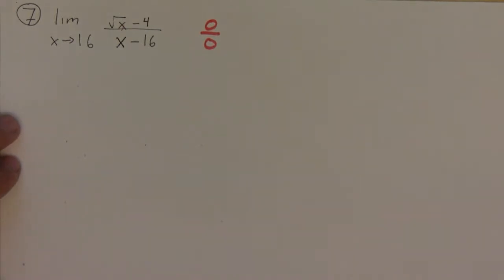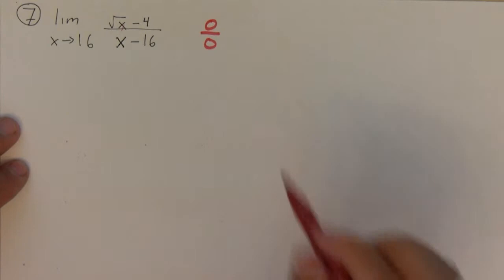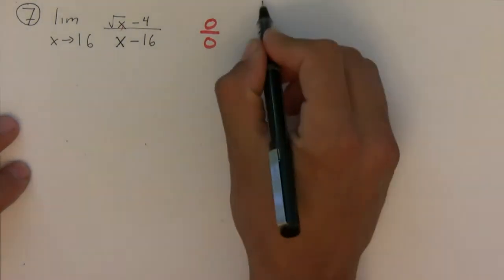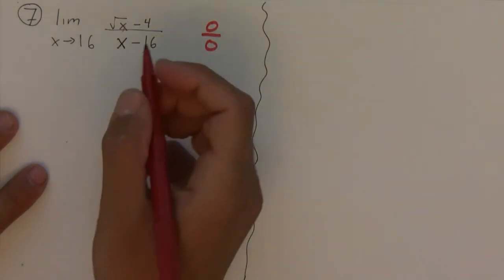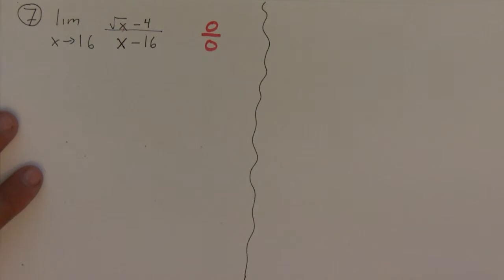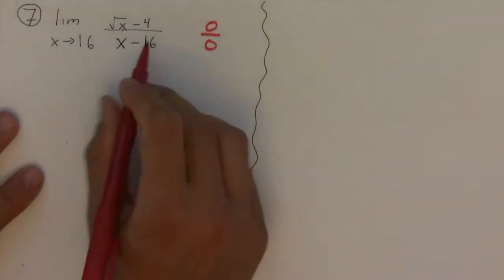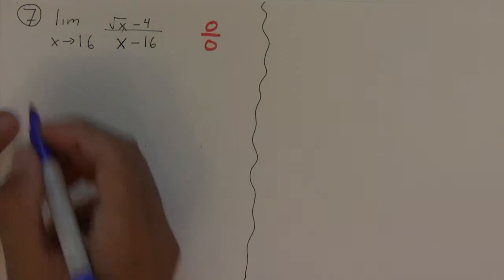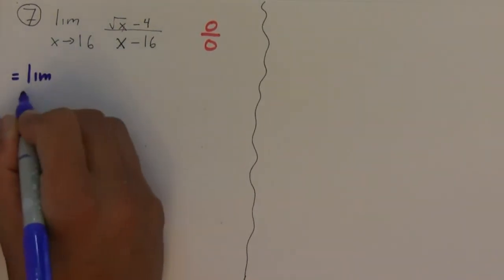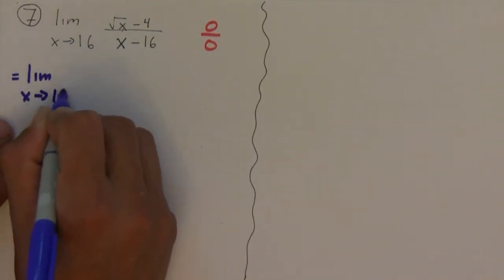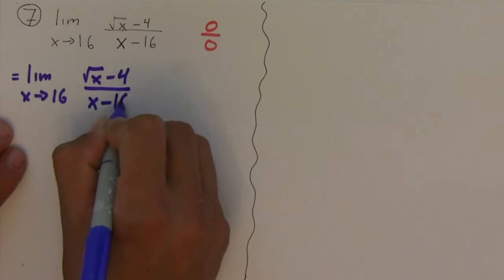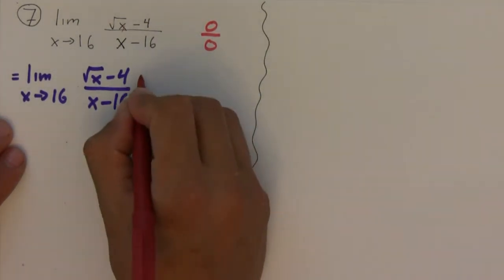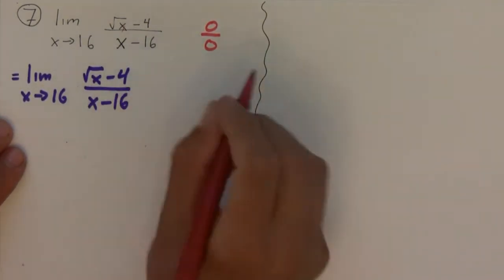In this case, there are two approaches to this. I'm going to show you both and then you can decide which one you prefer. Let's try multiplying by the conjugate first. So I'm going to rewrite this so I have the limit as x approaches 16 of square root of x minus 4 over x minus 16.